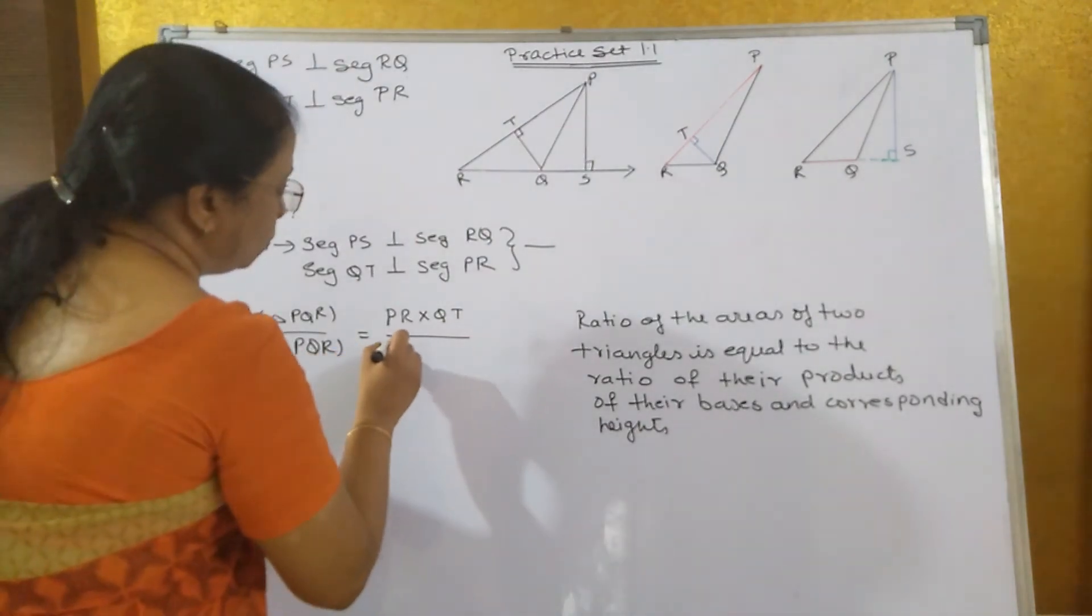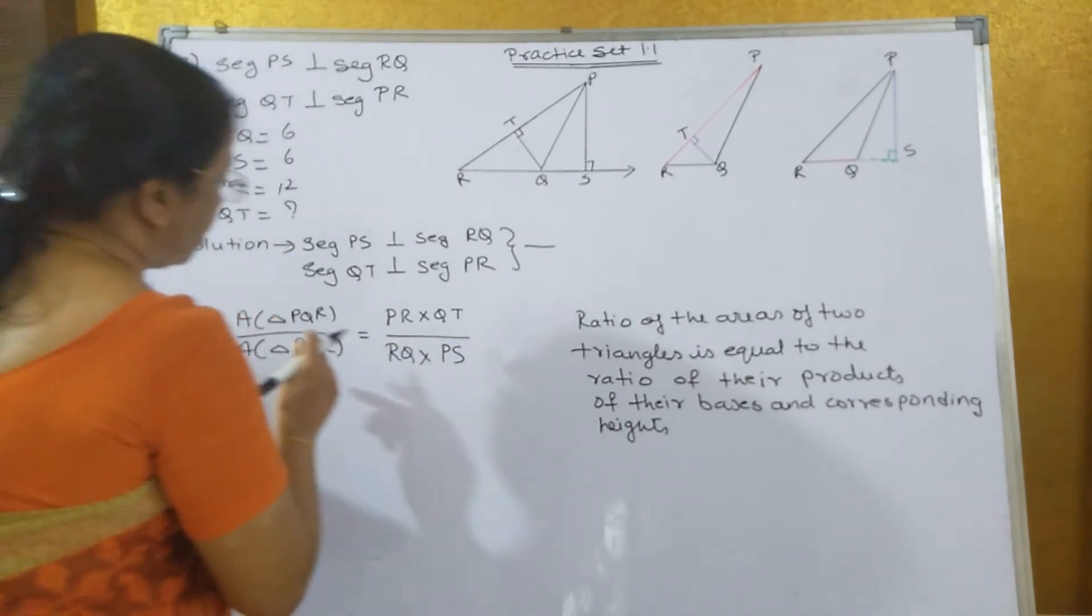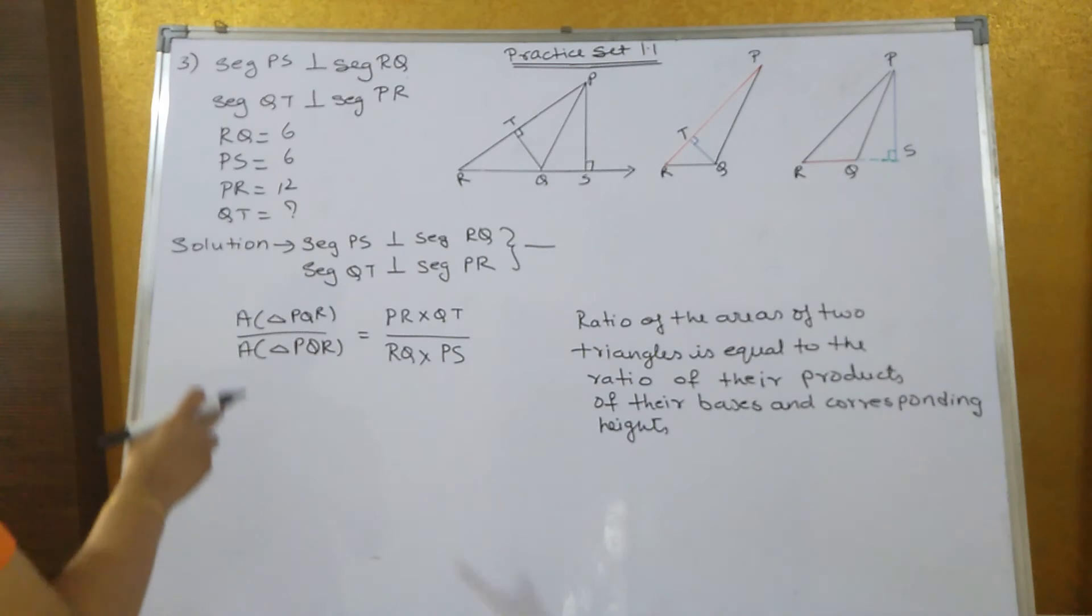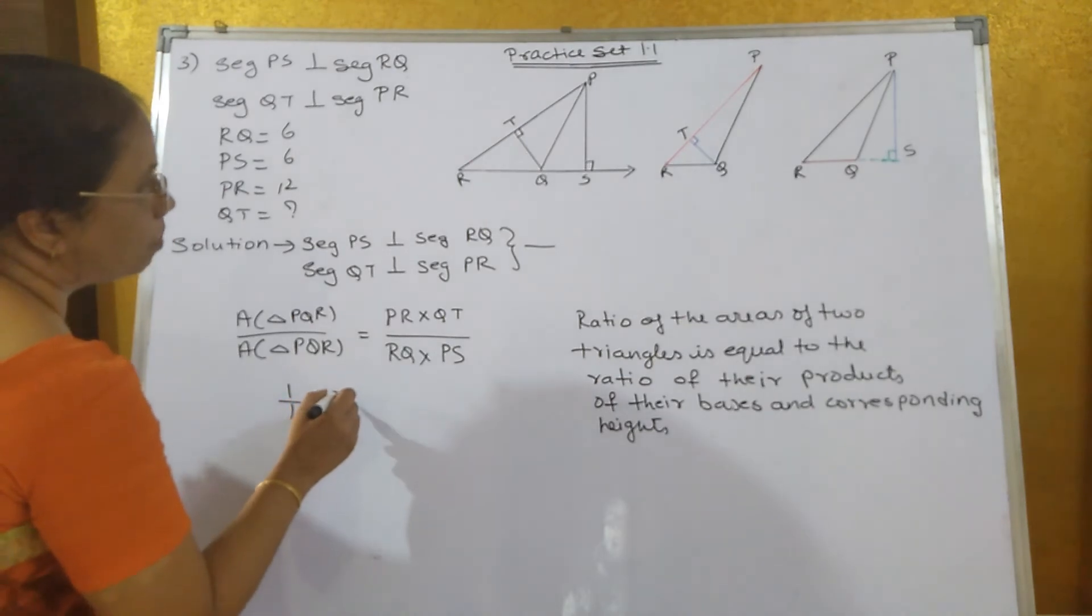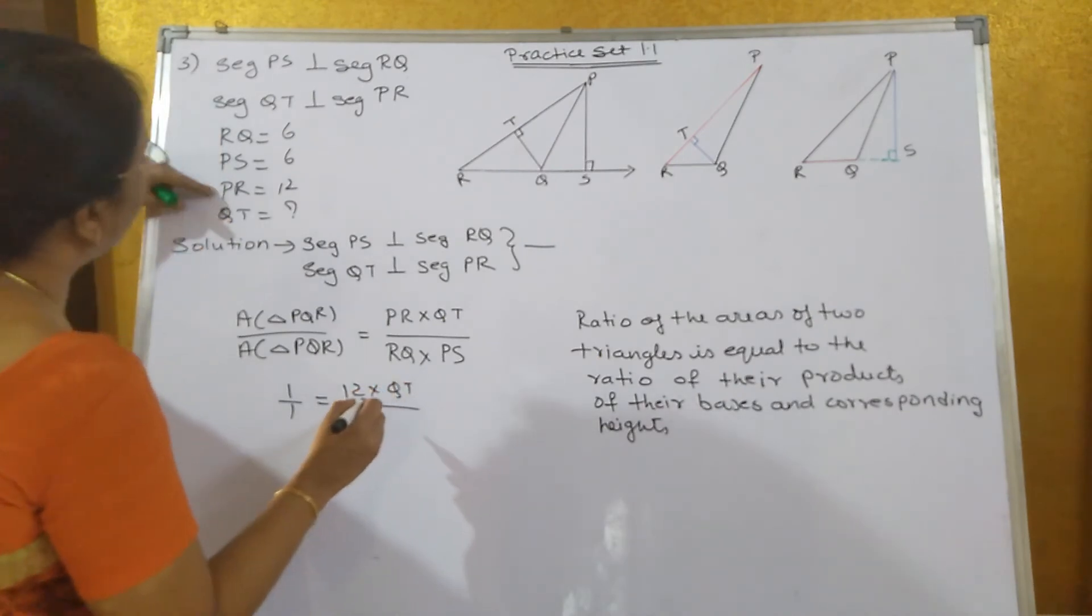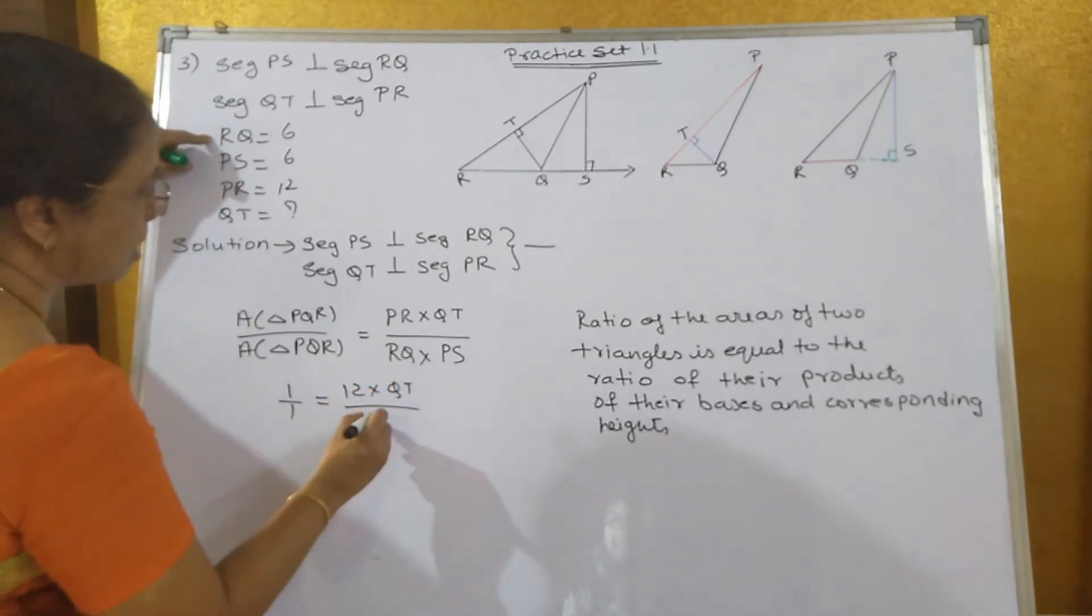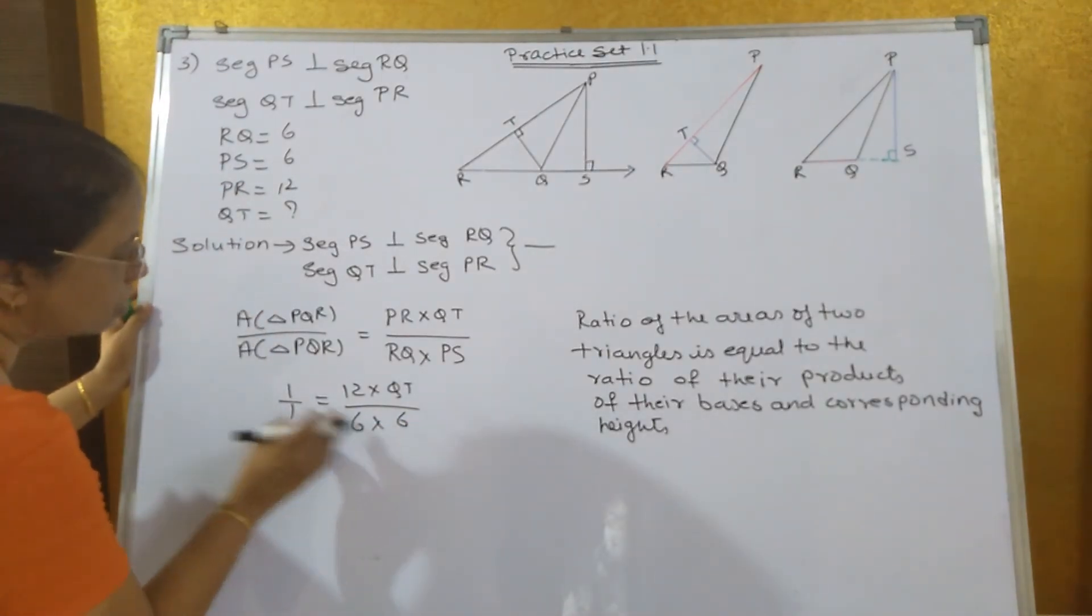So we have base is what? RQ and height is what? PS. Now area of triangle PQR upon area of triangle PQR, both will get eliminated and become 1. This is equal to PR, which is 12, times QT we have to find out, upon RQ, which is 6, times PS, which is also equal to 6.